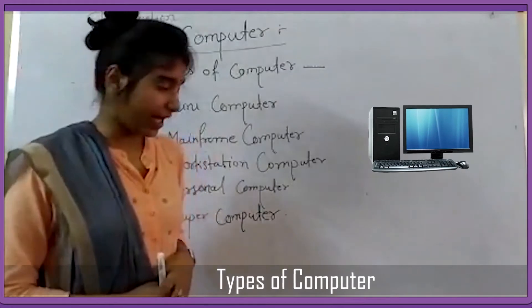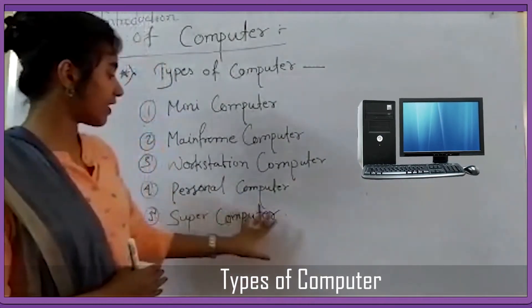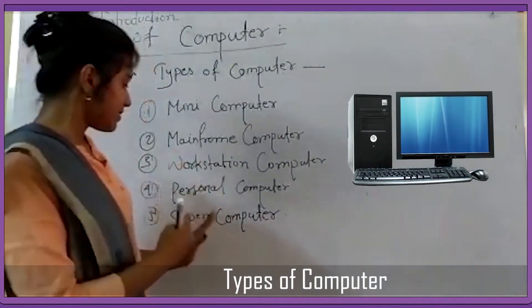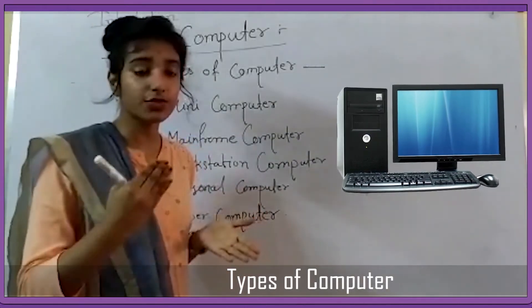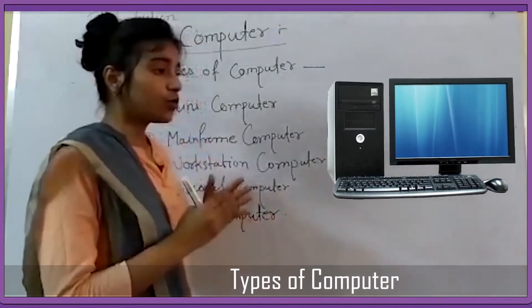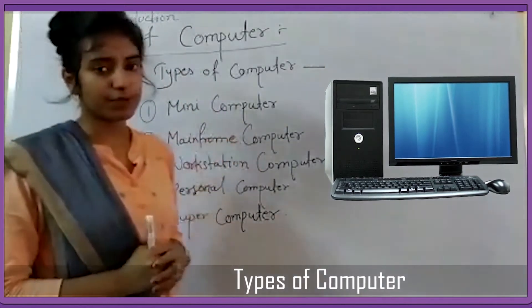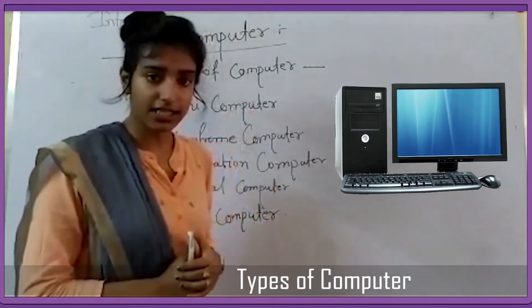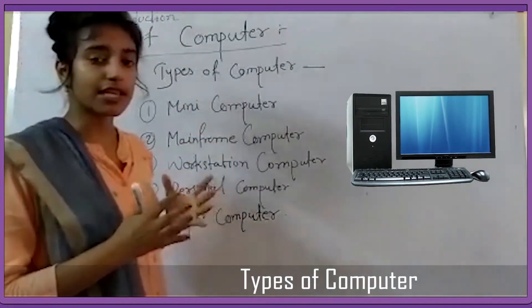The first computer that was created was the super computer. The size was huge. It was a multi-user computer. In one computer, there were more users working at the same time. Super computer, mini computer, and mainframe computer were multi-user computers where multiple users could work on one computer simultaneously.